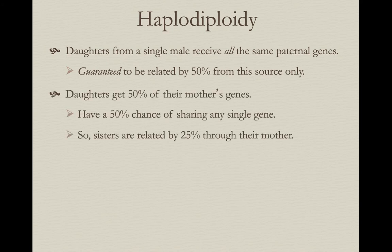Because females are diploid, they get the other 50% of their genes from mom, and these eggs are produced normally through meiosis. They have a 50% chance of sharing any single allele at any single gene. During meiosis, it not only cuts the DNA in half from diploid to haploid, but because of independent assortment and crossing over, it randomizes the combinations of alleles at different loci.